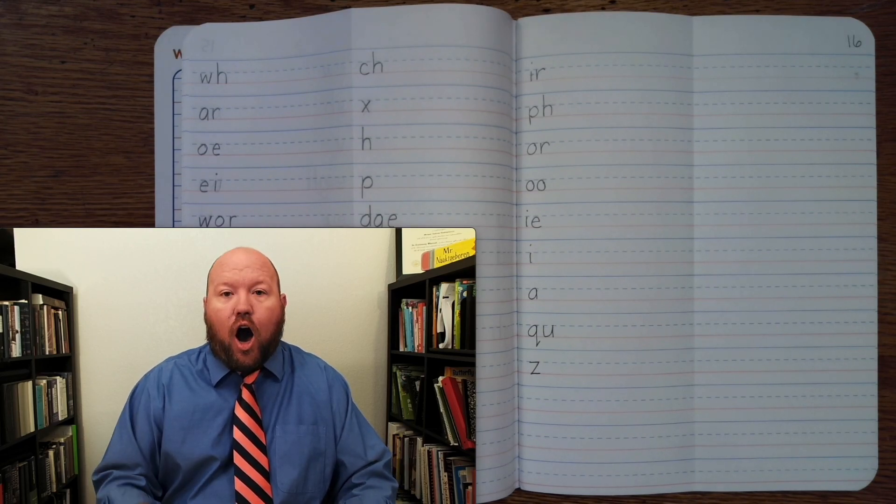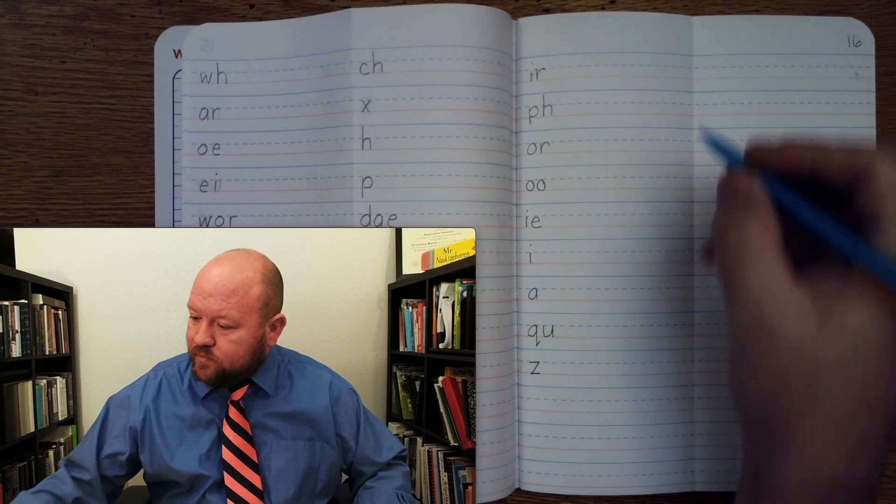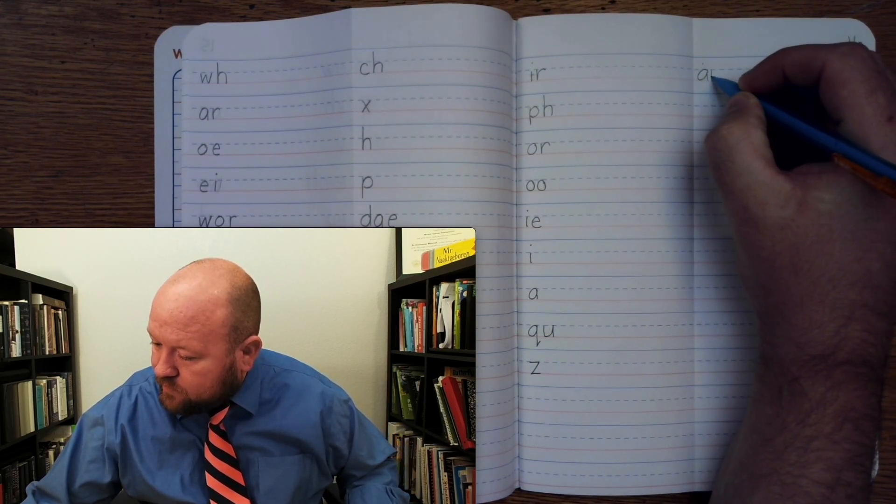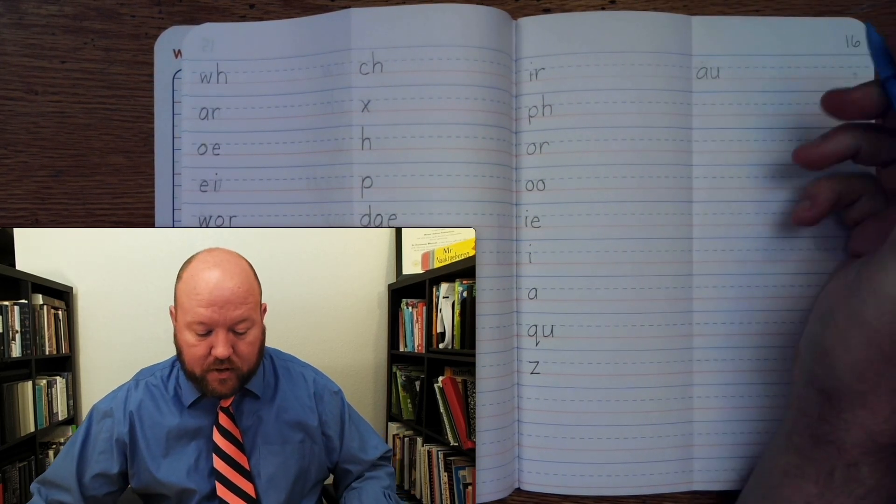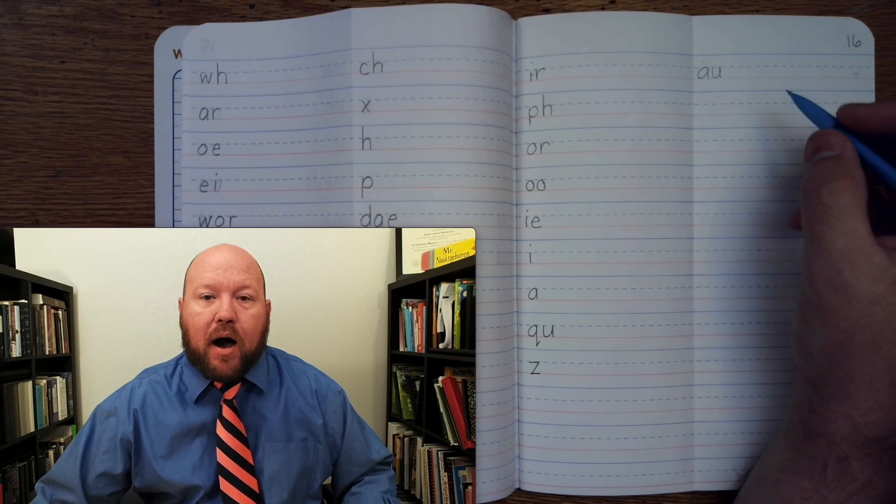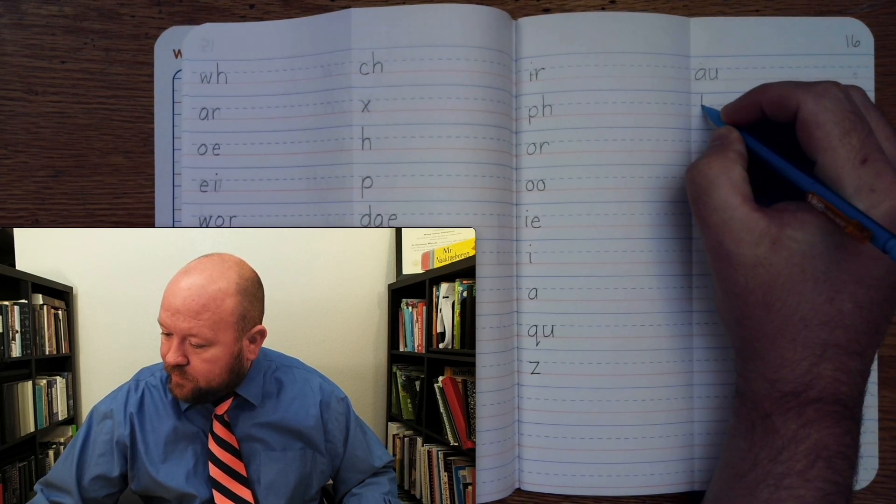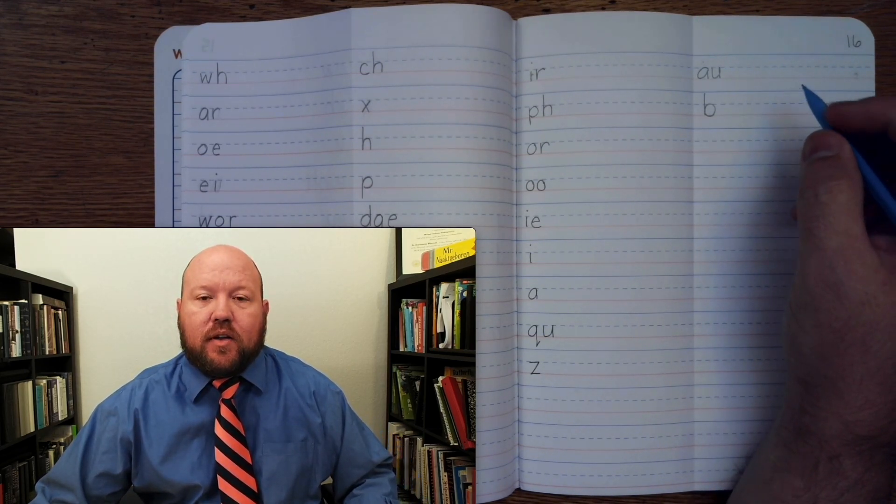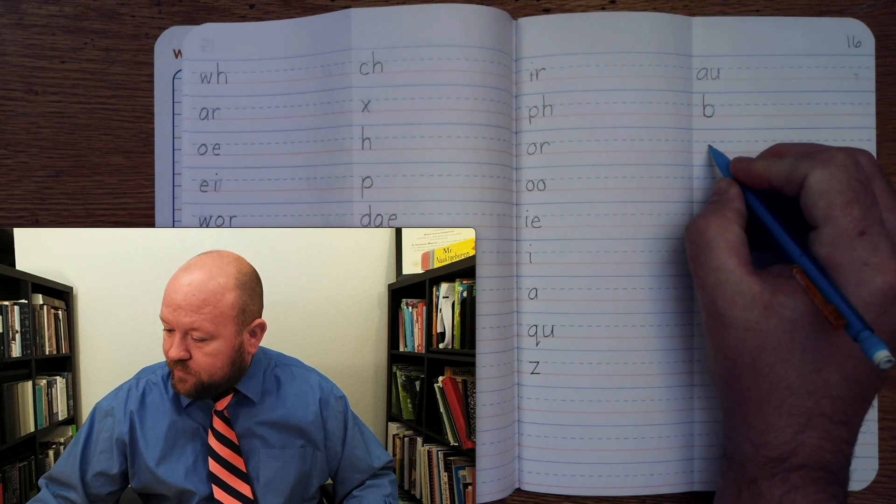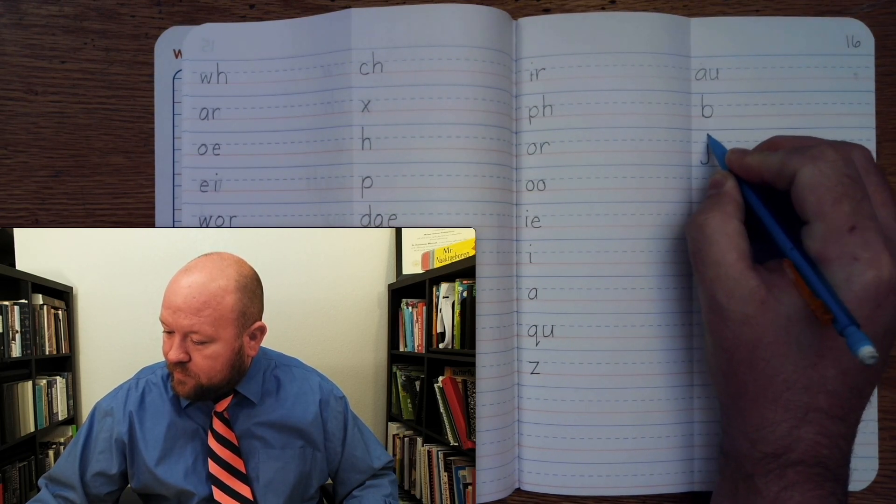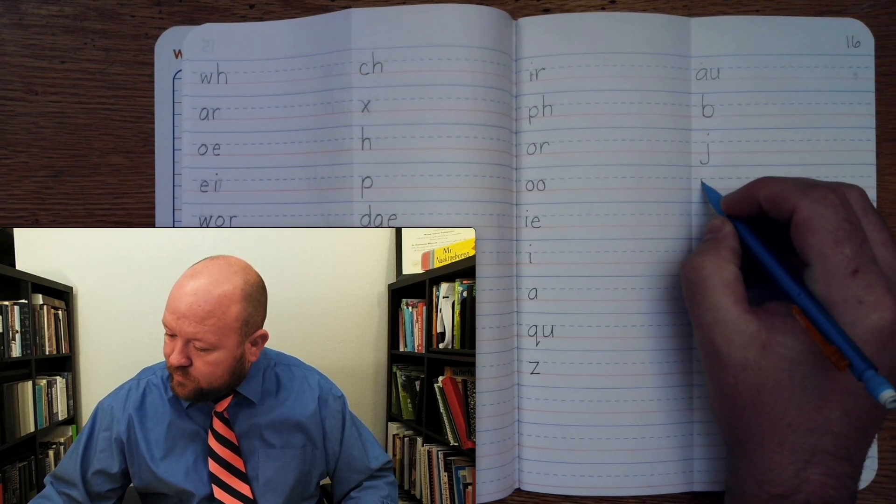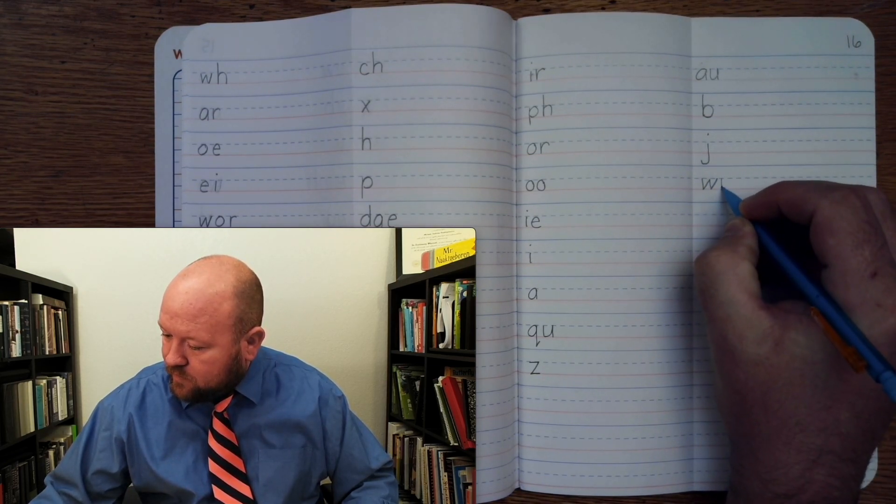The first one is, aw, aw. Next one, buh, buh. Next one, brr, two letters. Brr, two letters.